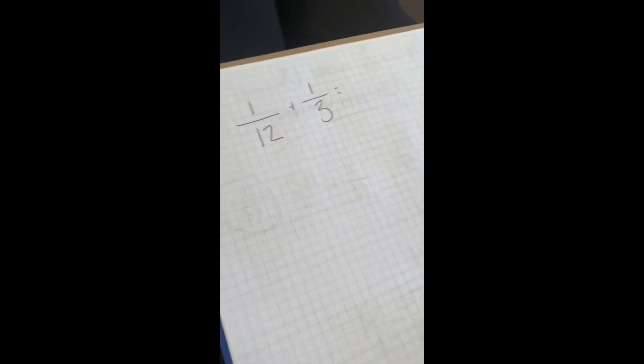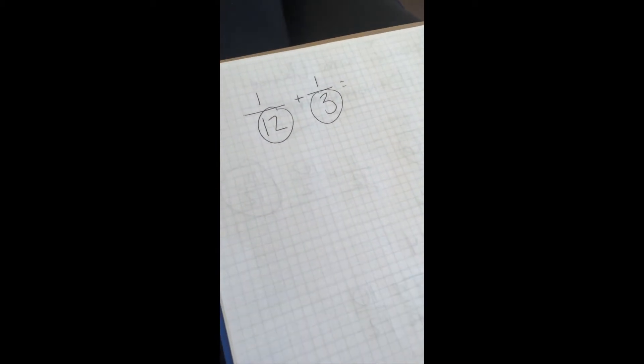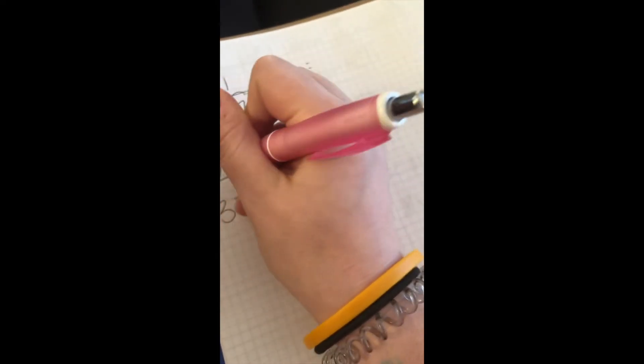Okay, so here's another problem. So we have 1 twelfth, that's a plus one, plus 1 third. So you would be looking at your denominators again that are different. So you would have 12 and 3, you'd list your multiples.